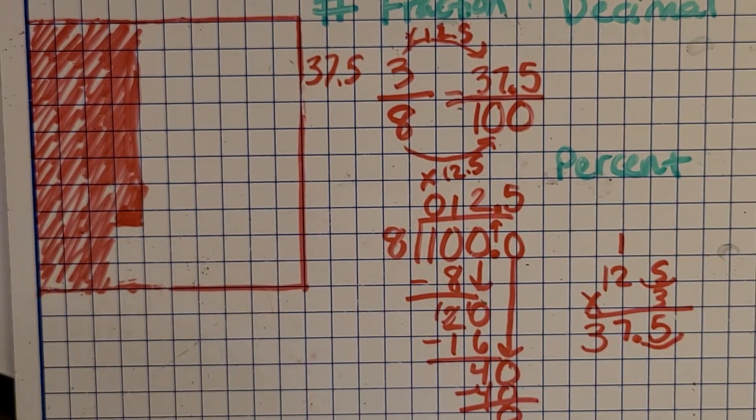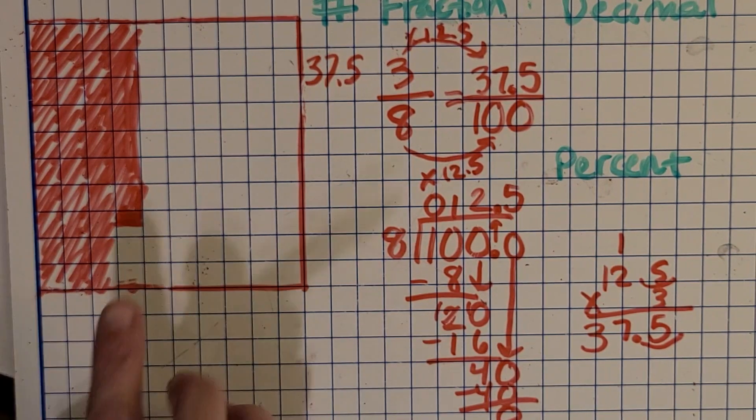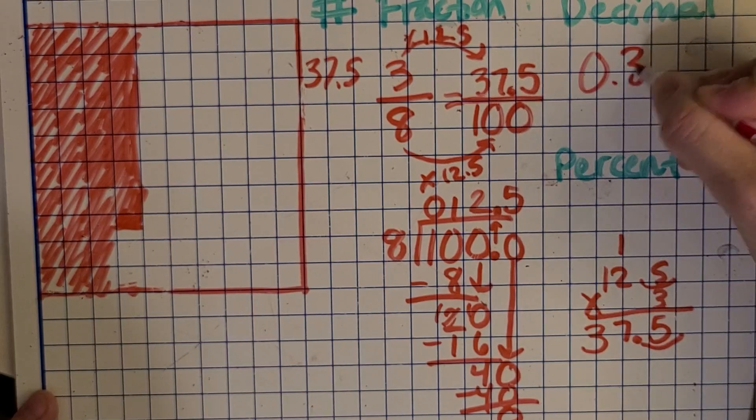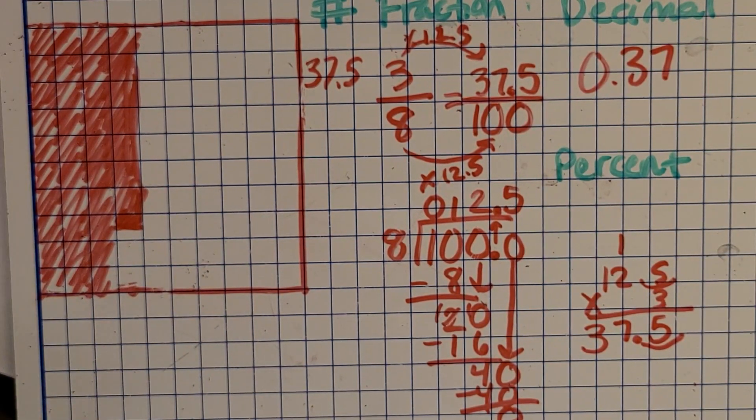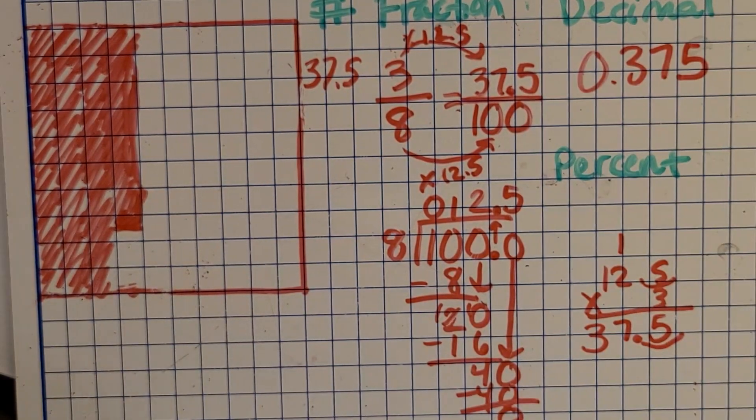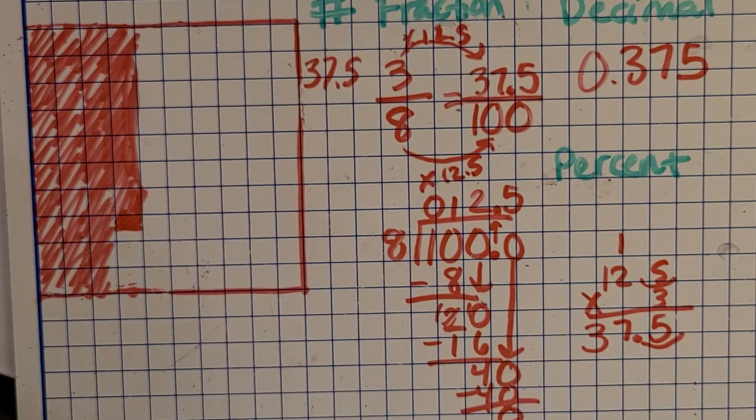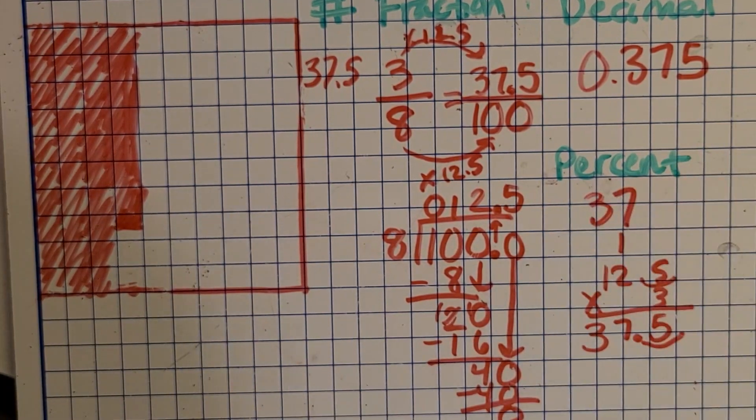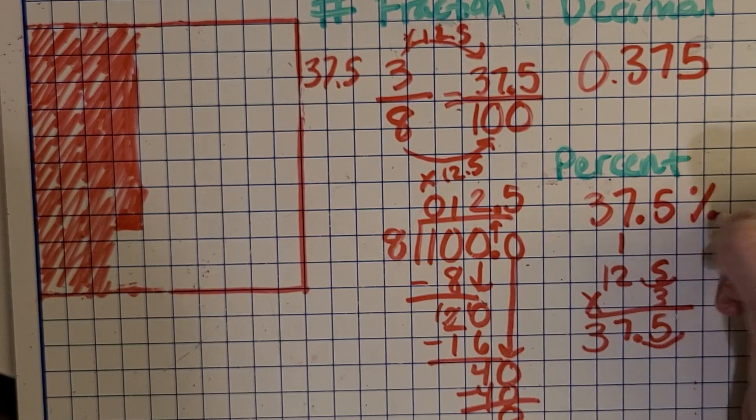And then what decimal do you think we can write for this amount? If it was 37 squares and not this little half square, we would just put, you know, 0.37. But what do you think we can do with the five? If we just put it on the end here, then it matches with our fraction. And then what percent do you think we should write? Remember that the percent is always related to the fraction if it's over 100 and the decimal. Once again, if it was just 37 squares, it would be 37%. But it's also that half square or 0.5, so it's 37.5%. Great job.